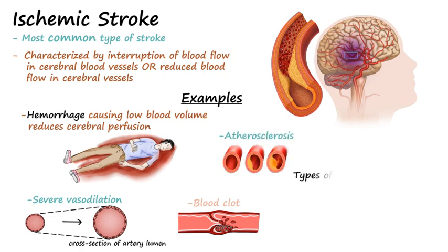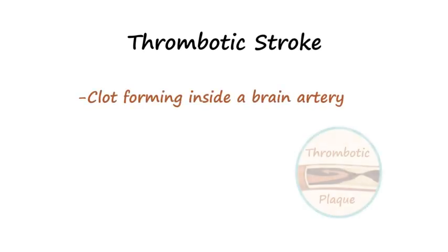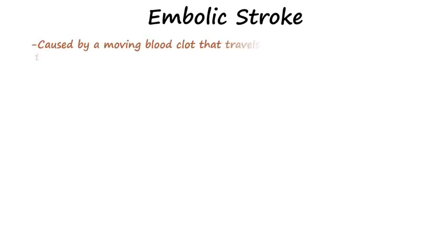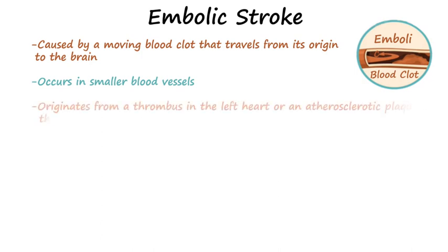There are two different types of ischemic stroke that can occur due to blood clots: thrombotic stroke and embolic stroke. Thrombotic strokes are characterized by a clot forming inside a brain artery and more often occur in large vessels. Embolic strokes are caused by a moving blood clot that travels from its origin to the brain and occur more often in smaller blood vessels. Cerebral emboli mostly originate from a thrombus in the left heart or in an atherosclerotic plaque in carotid arteries.